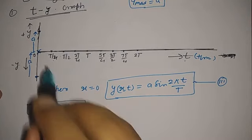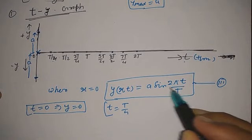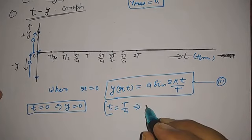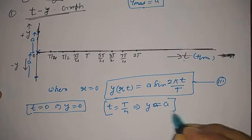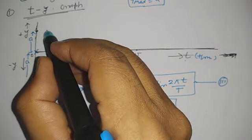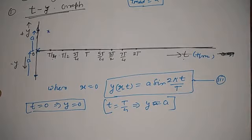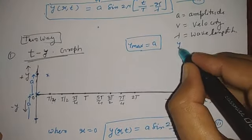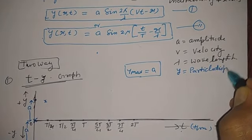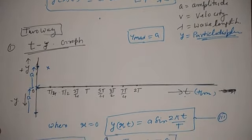The second coordinate is when t = T/4. Putting this value, it becomes sin(π/2) and sin(π/2) = 1, so y = A. So at t = T/4, the displacement of the particle is at maximum distance A. This is the second coordinate.